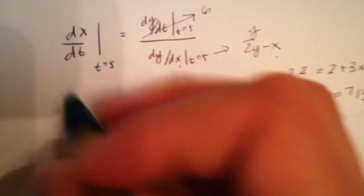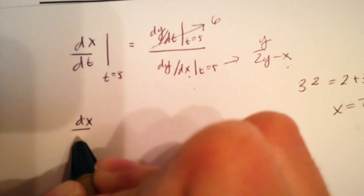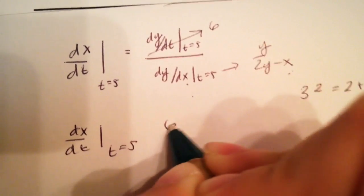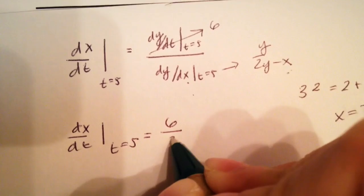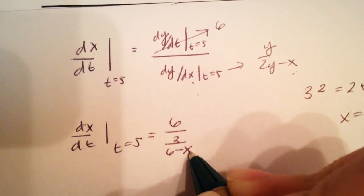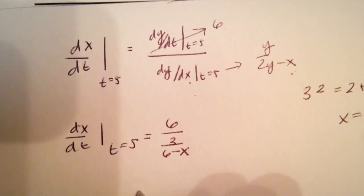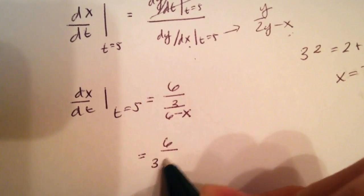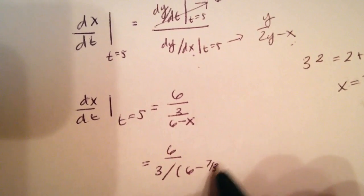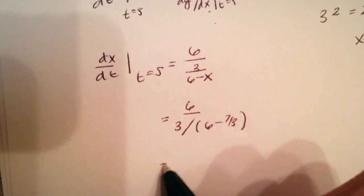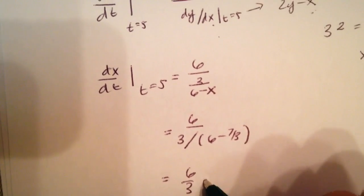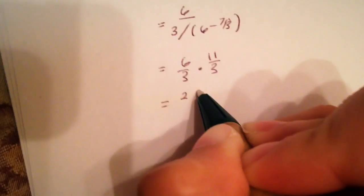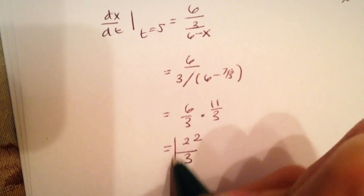Now we write the equation again: dx/dt at t equals 5 equals 6 divided by (3 over (6 minus 7/3)). Plugging in x equals 7/3, we get 6 over (3 divided by (6 minus 7/3)), which simplifies to 6 over (3 times 11/3), giving a final answer of 22/3.